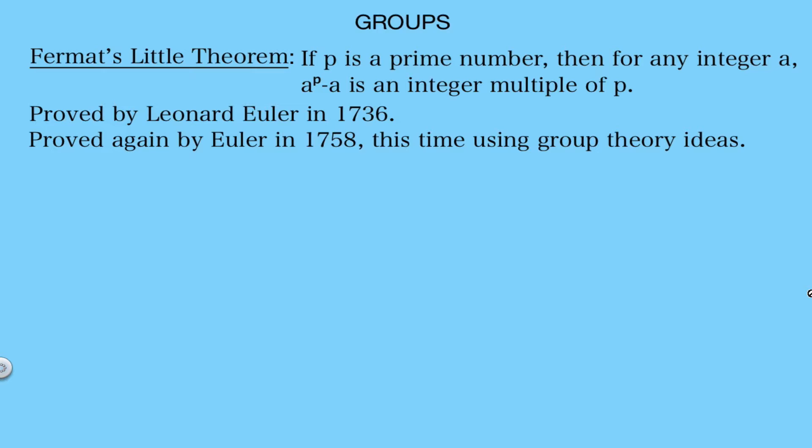Lagrange, another influential mathematician, also unknowingly used ideas from group theory in 1770 when he introduced the idea of permutations of roots used to solve polynomials of higher degrees. So even though the definition of a group was not explicitly given until 1882, there are multiple examples of groups that were used before that time.